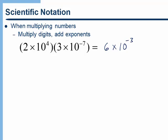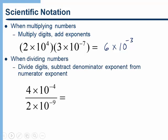When we're dividing, we divide the digits out in front and then we subtract the exponent in the denominator from the exponent in the numerator. So for example, 4 divided by 2 is just 2. And now what I want to do in the exponents is I want to take the numerator exponent negative 4 subtract the exponent in the denominator. So minus negative 9. And you'll notice that that is equal to 5. And so my answer would be 2 times 10 to the fifth.